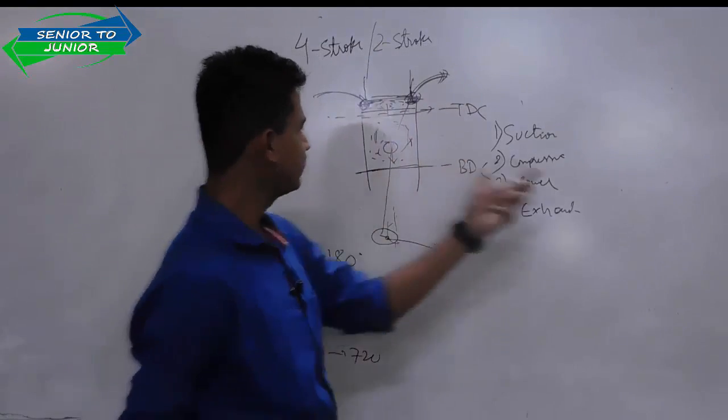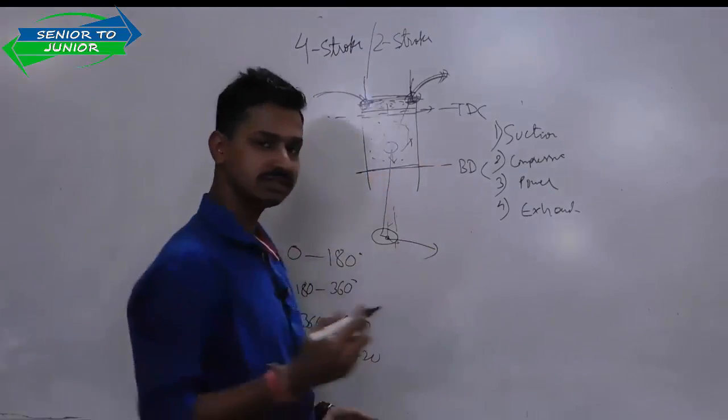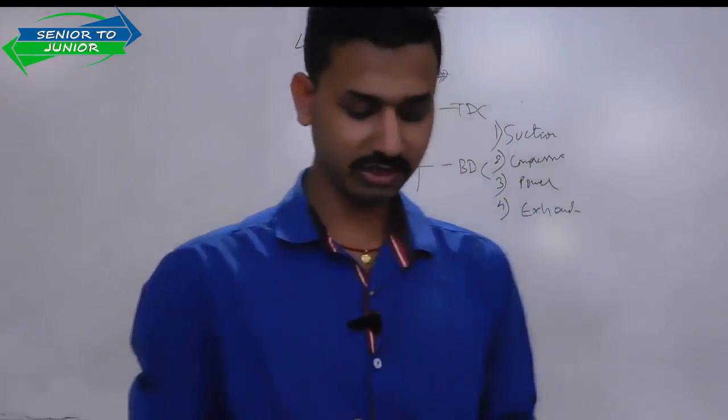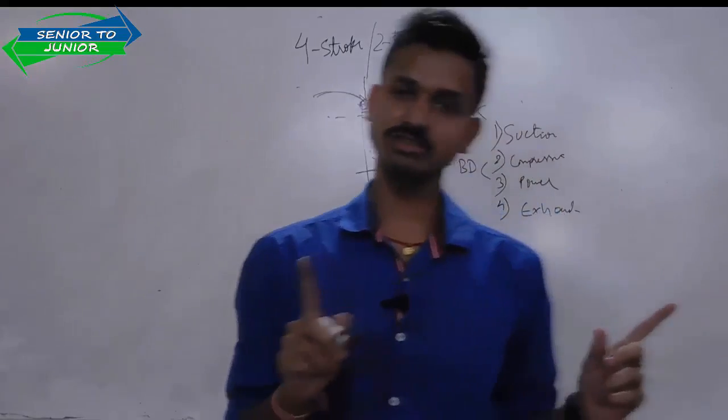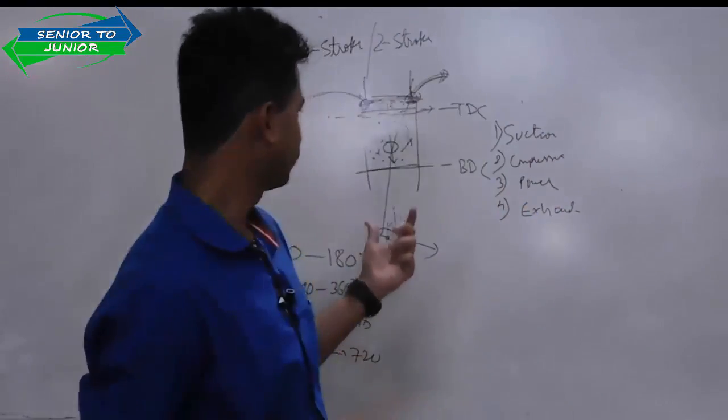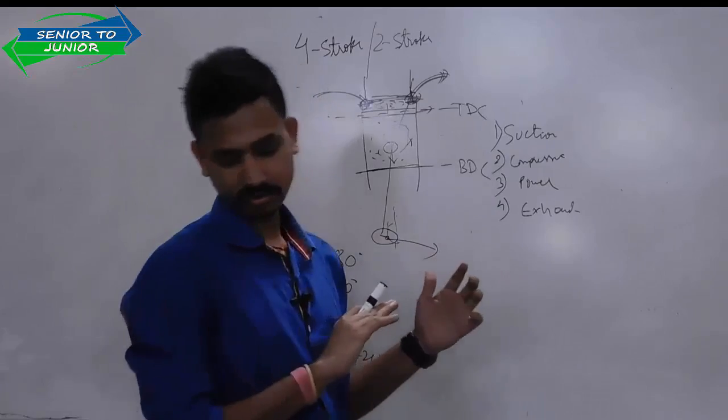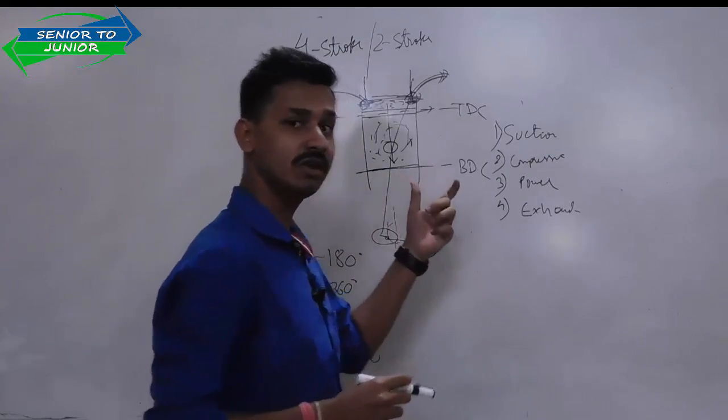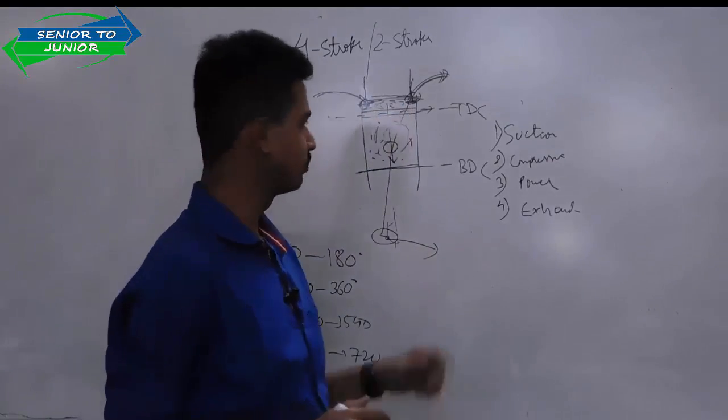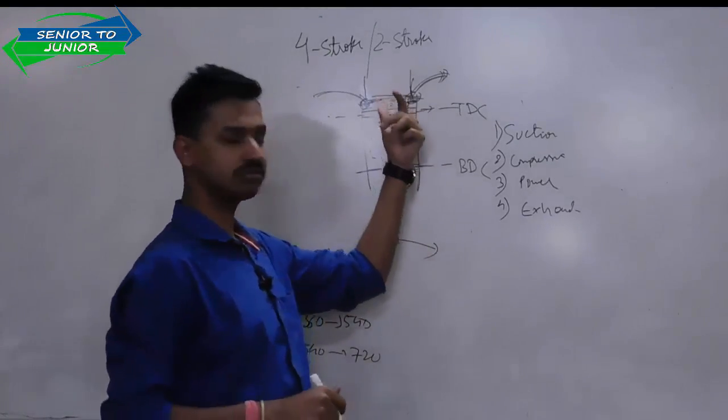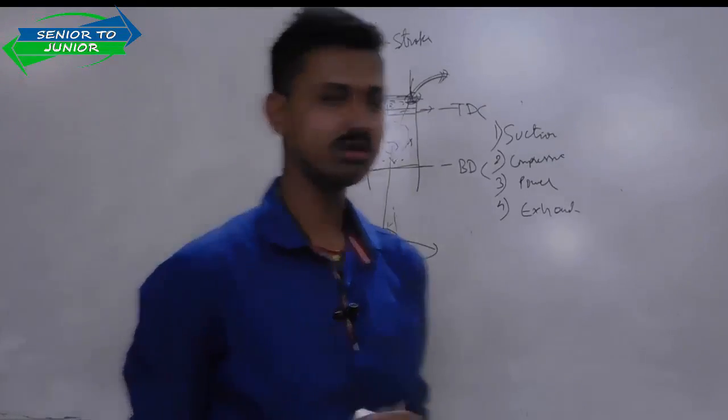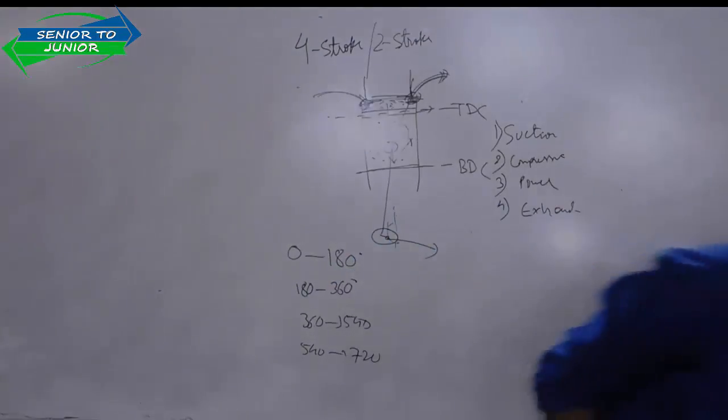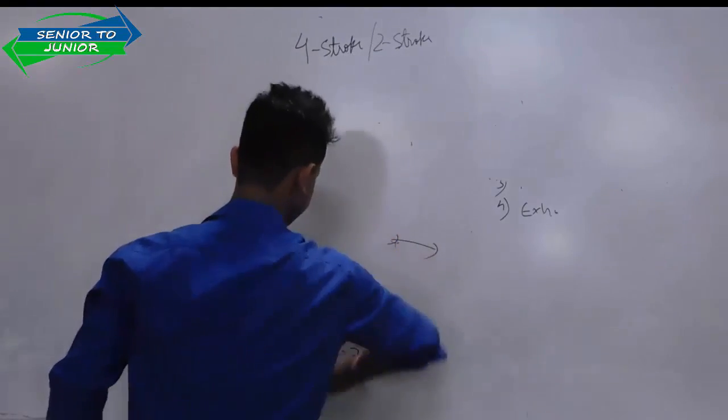Total two crank rotations you will be requiring to complete the process of a four-stroke engine. In four-stroke, you are just utilizing one stroke for power. That means you are getting only one power stroke and the rest three are dull strokes. They are not adding any value to your engine. The main stroke is your power stroke that is creating power. It has one main stroke and three unutilized strokes called dull strokes. Now let us see a two-stroke engine.